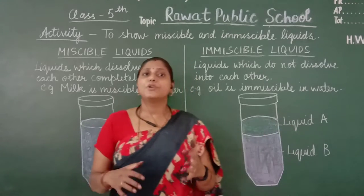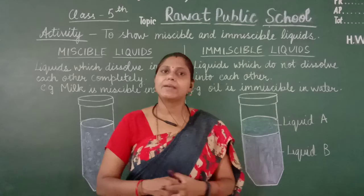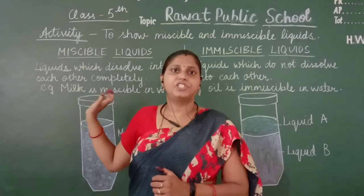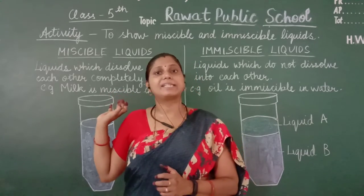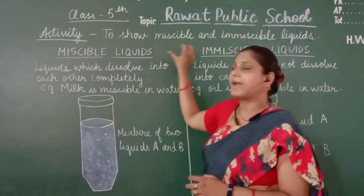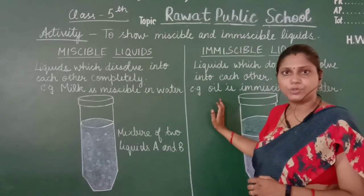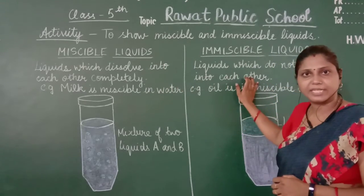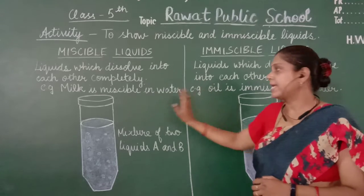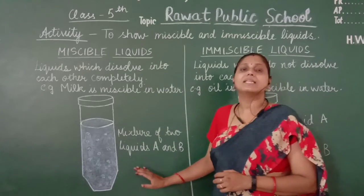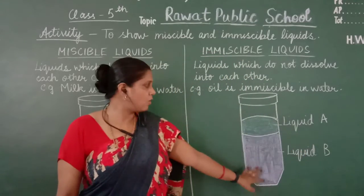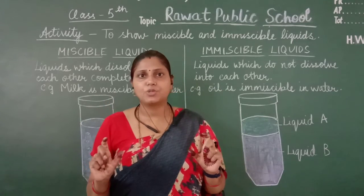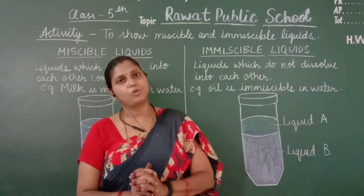I hope with this diagram you have understood what miscible and immiscible liquids are. Now you have to do this activity in your copy. Divide the page into two parts — on one side write miscible liquids and on the other side write immiscible liquids. Write the definition and examples for each, then draw the diagram. The diagram is also given in your book, so you can refer to it. Use colors to show the two different liquids.